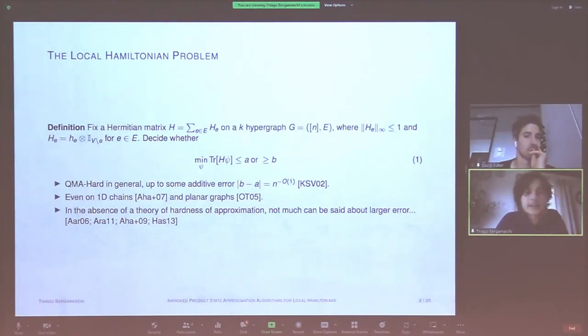And this task, it's QMA-hard in general, following seminal work by Kitaev and others, up to some additive error, inverse polynomial additive error. And it's hard even on very simple and structured graphs, like 1-D chains or planar graphs. But in the absence of a PCP theorem, or just a generic theory of hardness of approximation, not really much can be said about a larger error or different types of hypergraphs.